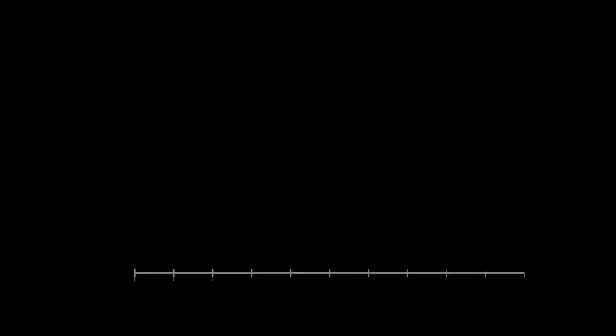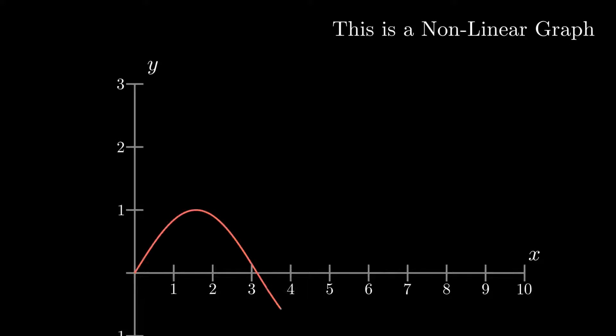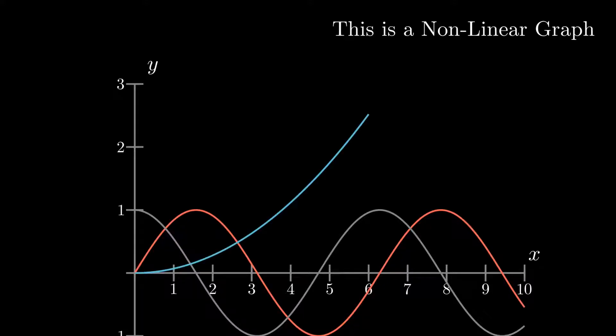Contrary, if any line which is not straight like the sine or cosine curve and any polynomial equation is non-linear, hence it shows a non-linear relationship between the data.